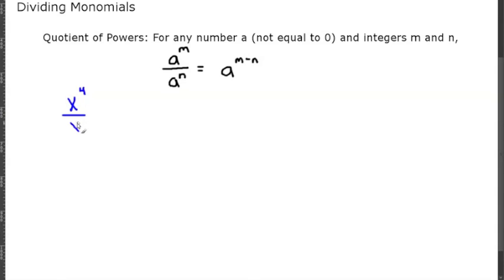Let's take a look at this. Say that I give you x to the fourth over x squared. From the formula, that's going to be x to the 4 minus 2, which is just x squared.